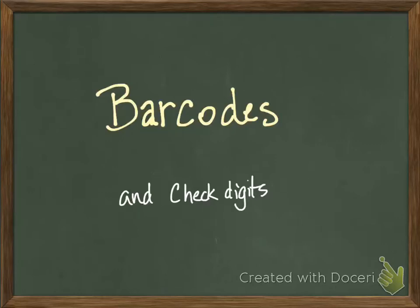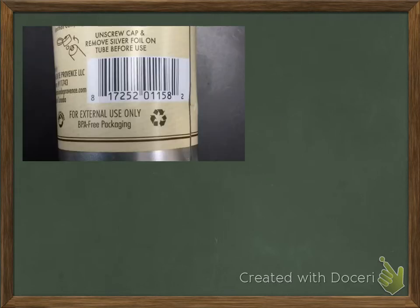We've been working on weighted averages and weighted sums, and we're going to talk about barcodes and check digits because that also involves a weighted sum. A barcode, of course, you've seen them everywhere.